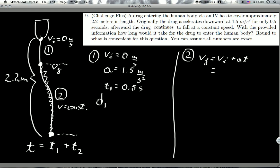...so our distance D1, which is this distance right here, I know that I can use VIT plus 1/2 AT squared. I have all of this. This is 0 because initially my speed is 0, and this I can substitute, which is 1.5 and 0.5 squared. Now, that comes out to, when you do the calculation, to 0.1875 meters.